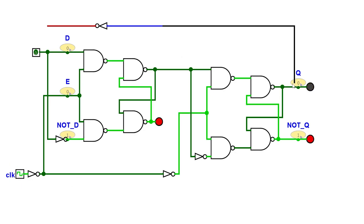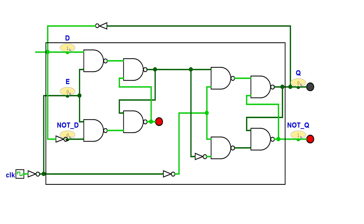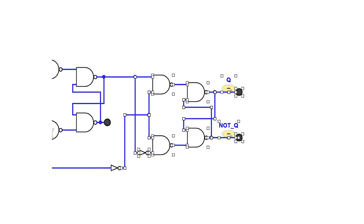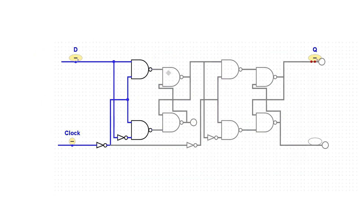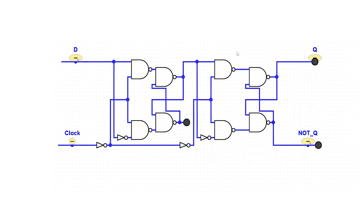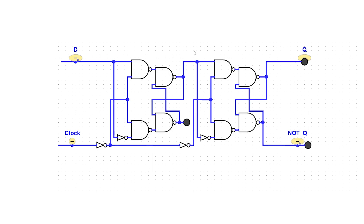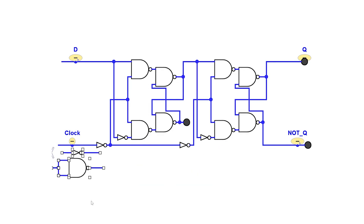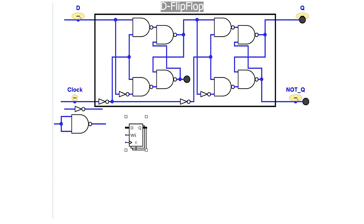So even if the second latch is in set-reset mode, the output remains constant because its input is constant. This cycle repeats and any change of the output will occur only on the next rising edge. Now even if the input depends on output, there will be no oscillations and new input will be taken only at the next rising edge of the clock signal. This new circuit is called a rising edge-triggered D flip-flop, because its output is its input value at the moment the clock goes from low to high. With this, we hope you understand how the D flip-flop works and can be made from NAND gates.